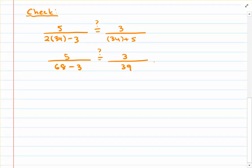Now, again, going back to the fraction that's on the left-hand side, we're going to have 5 over 68 minus 3, which that works out to be 65. And on the right-hand side, 3 over 39.